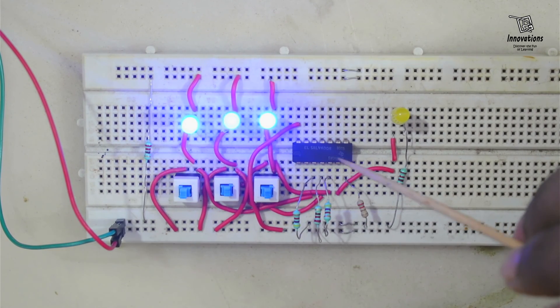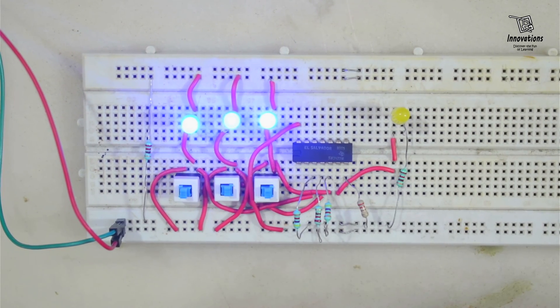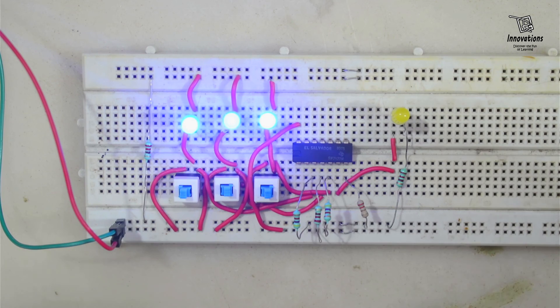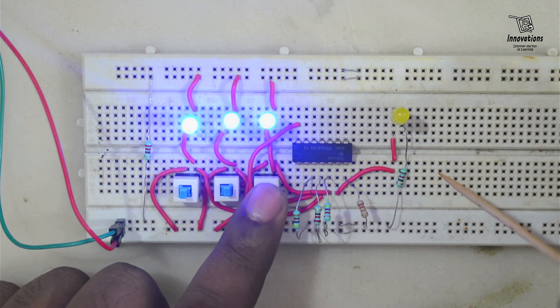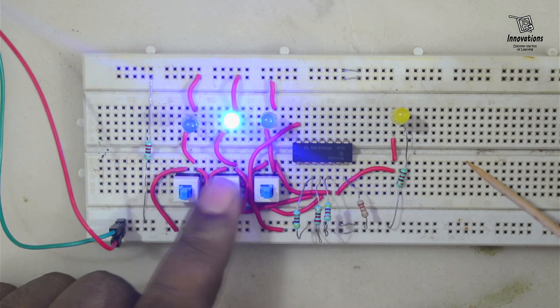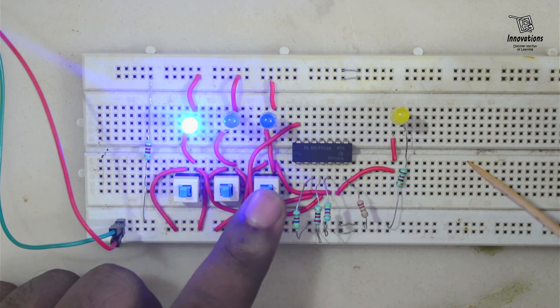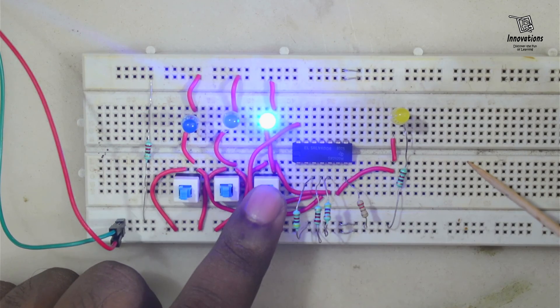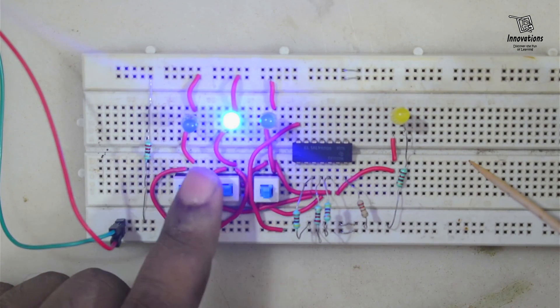And here we complete the demo of 7427 IC. If you have any confusion regarding this circuit you can ask in comments. In our next video I will show how to create the basic gates from a NOR gate. I will show creating NOR gate, OR gate and AND gate from a NOR gate. So this much for today, thank you for watching the video till the end.